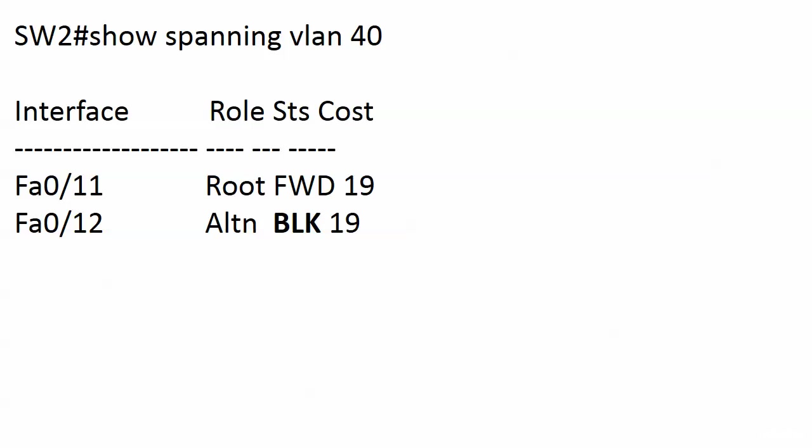In 'show spanning VLAN 40' — because we're running per-VLAN spanning tree, each VLAN has its own instance of STP — you can see the interface, the role, and the status. Once STP is converged, all you will see is FWD for forwarding mode and BLK for blocking mode. That's it.